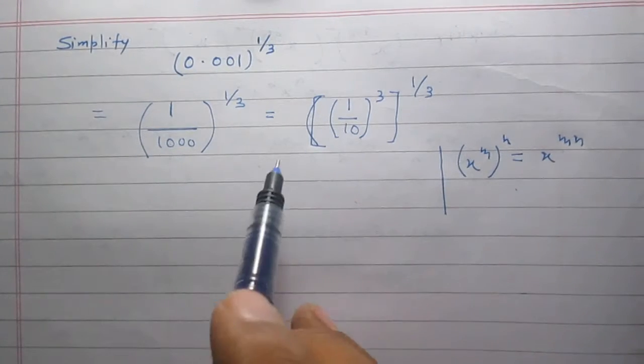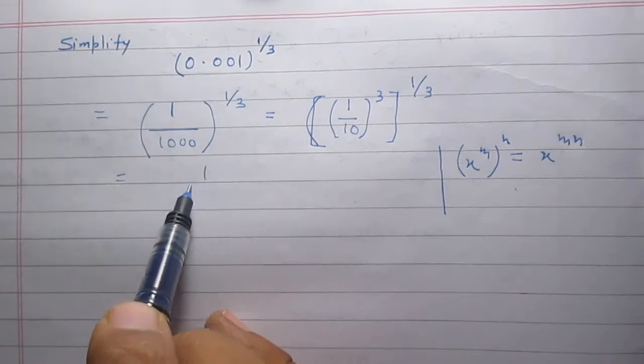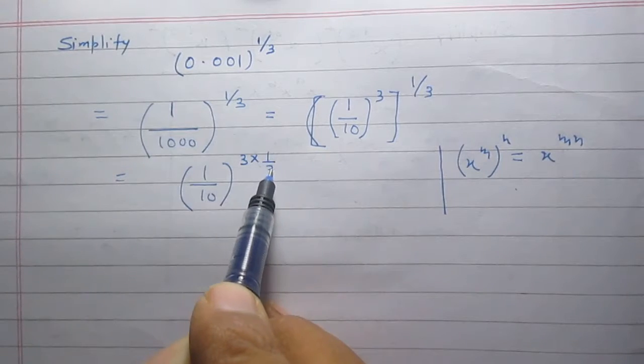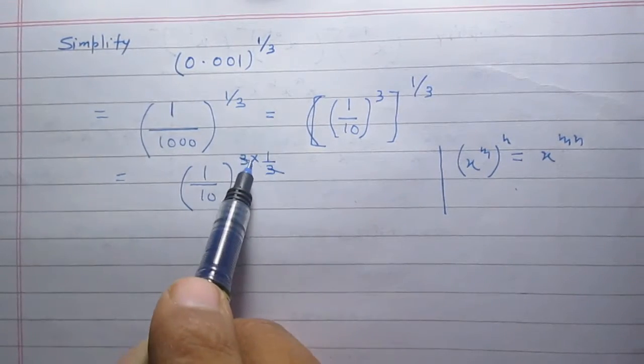So using this rule here, we will get 1 upon 10 raised to the power 3 multiplied by 1 by 3. So the result is 1.